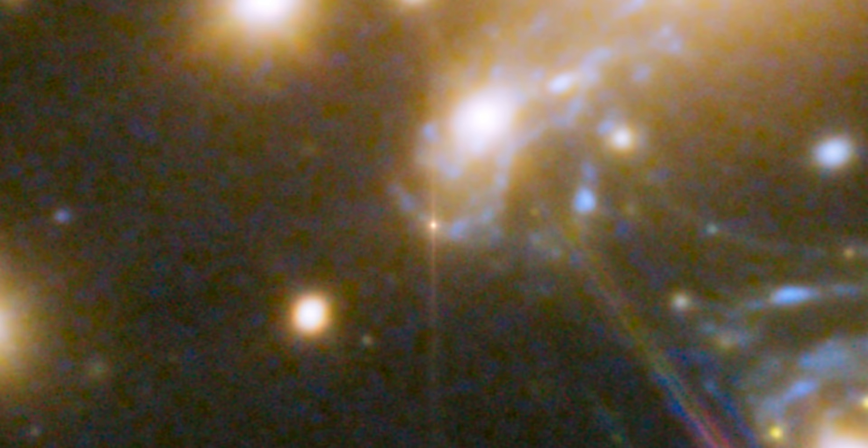This was first proposed by a Norwegian astronomer, Sierra Refstal, in 1964. Since this is the first observed multiply-lensed supernova, it has become known as supernova Refstal.